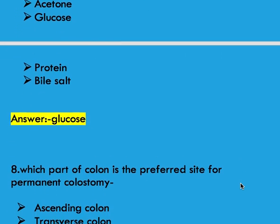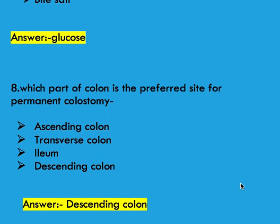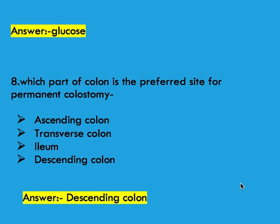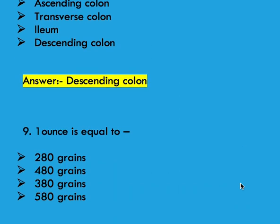Next question: which part of the colon is the preferred site for permanent colostomy? Options: ascending colon, transverse colon, ileum, and descending colon. Right answer is descending colon.